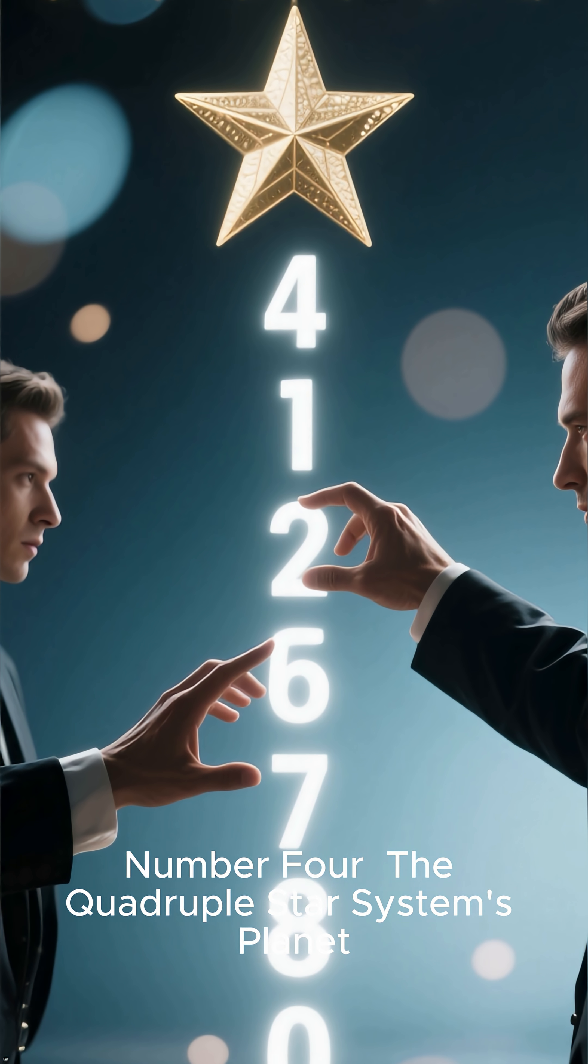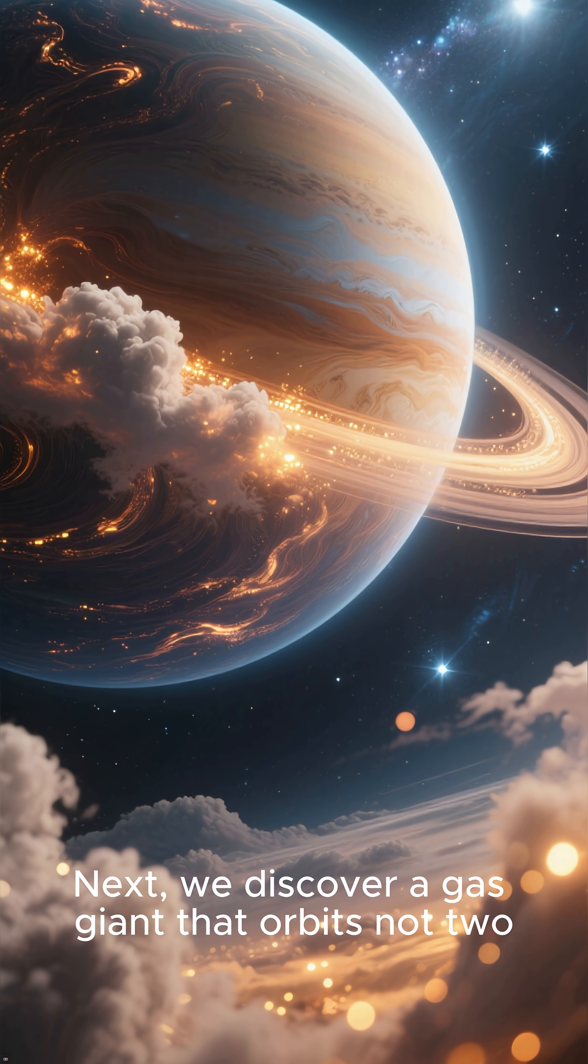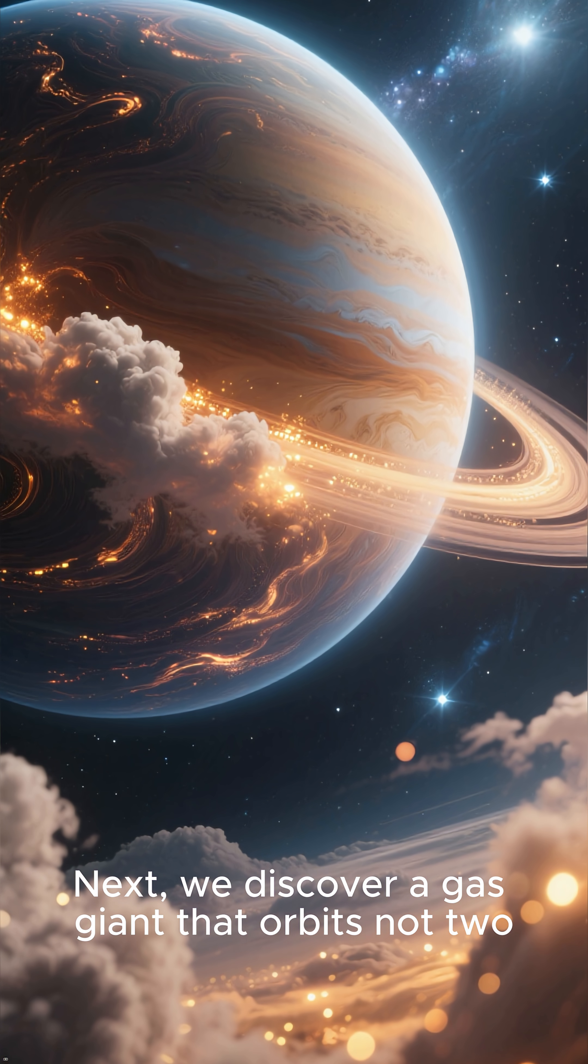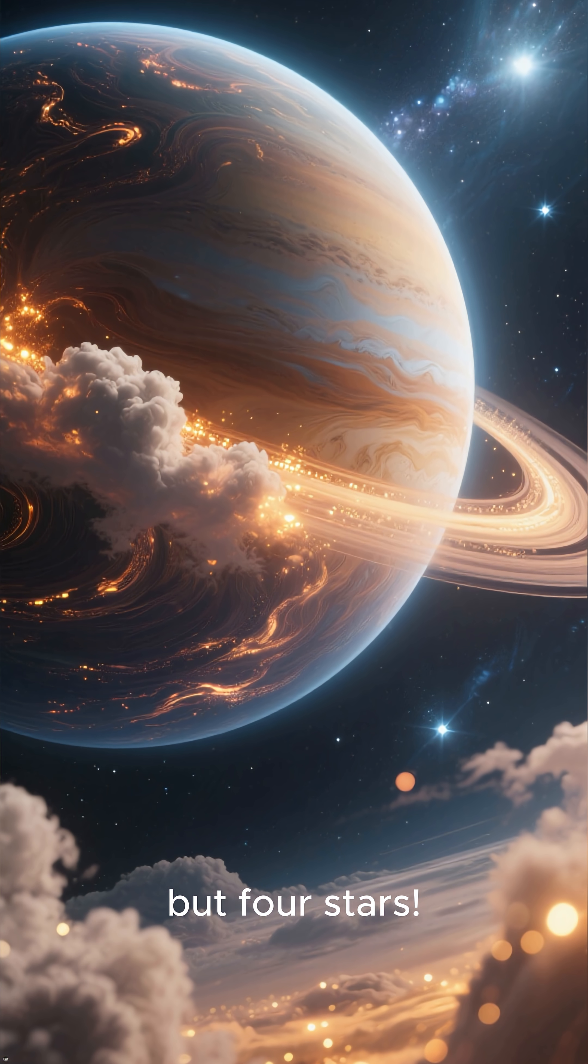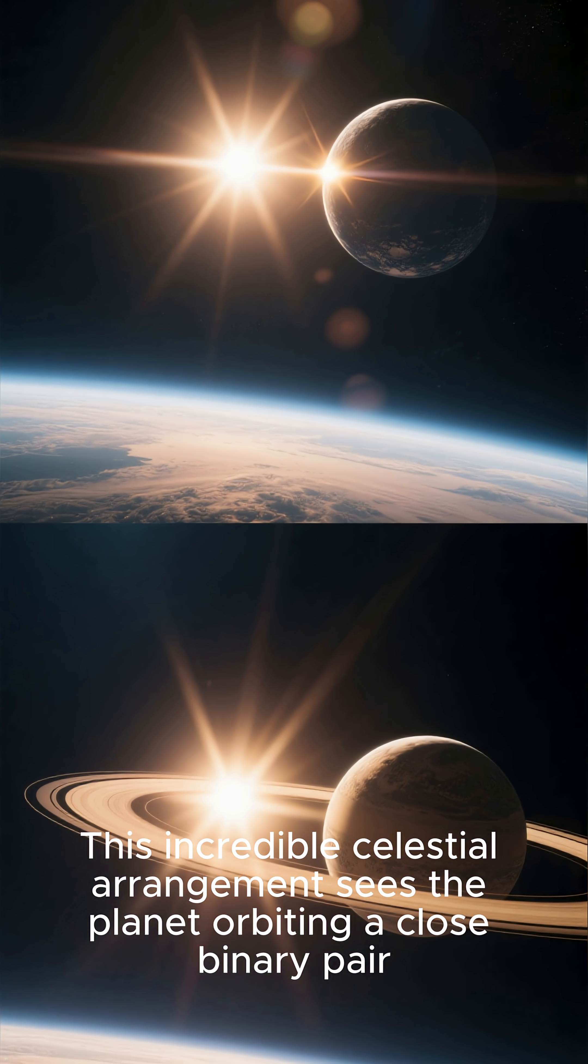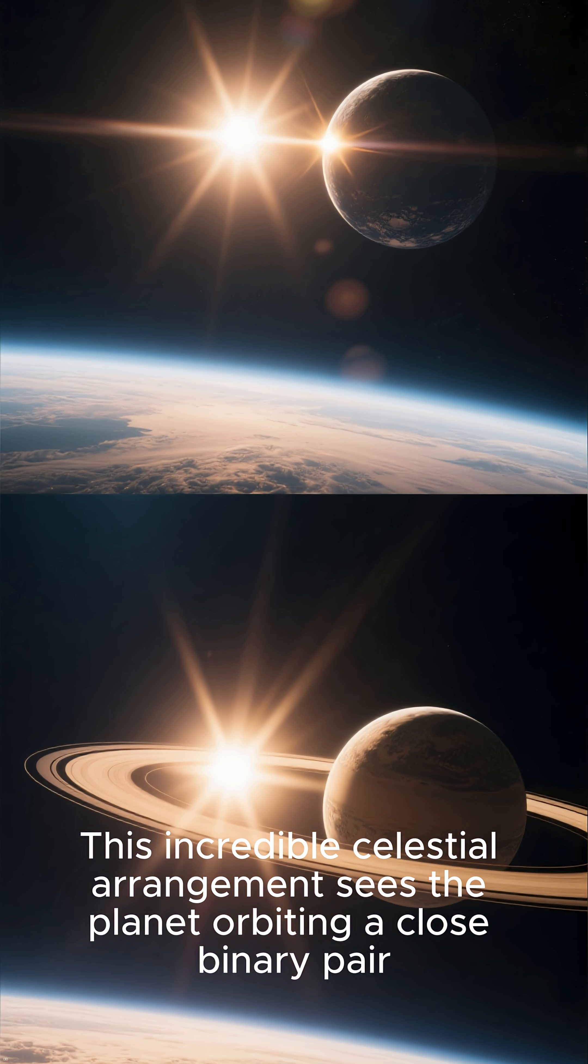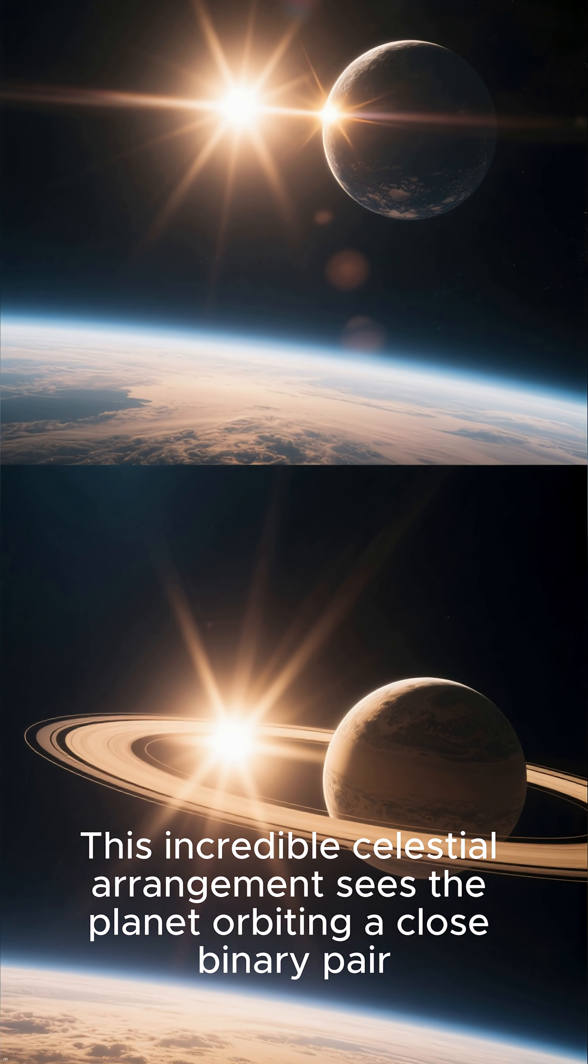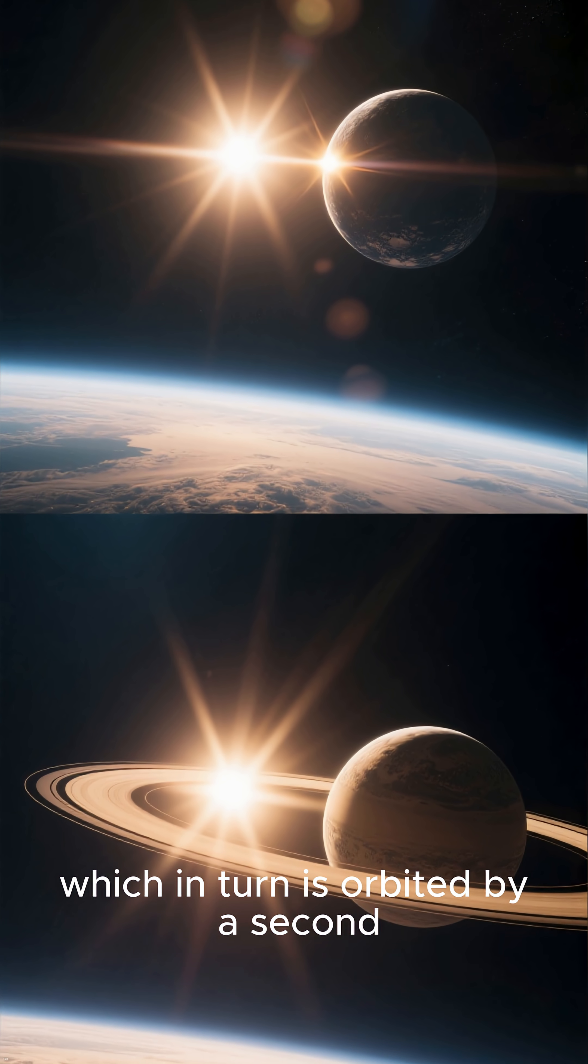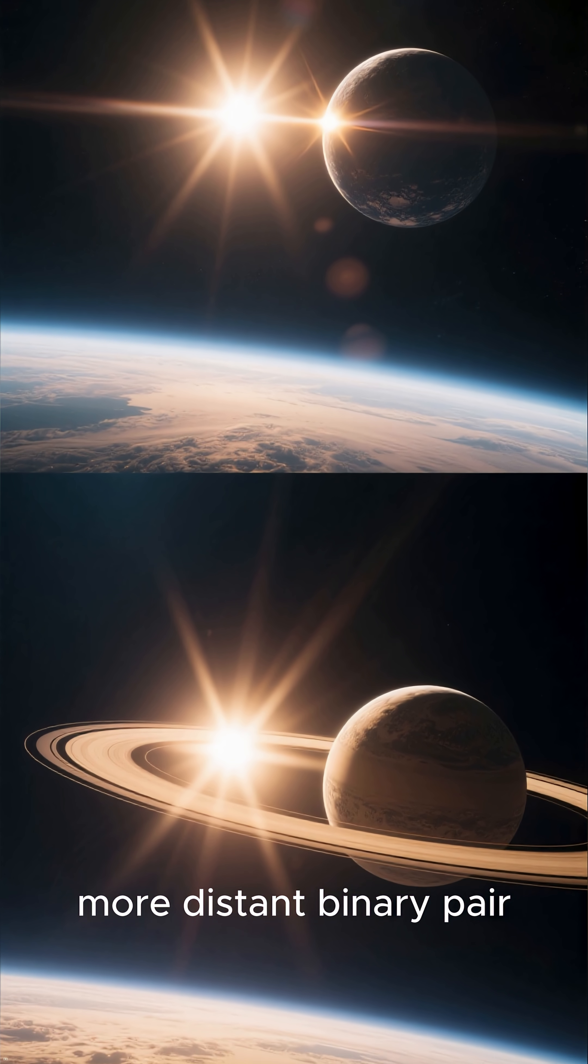Number four, the quadruple star system's planet. Next, we discover a gas giant that orbits not two, but four stars. This incredible celestial arrangement sees the planet orbiting a close binary pair, which in turn is orbited by a second, more distant binary pair.